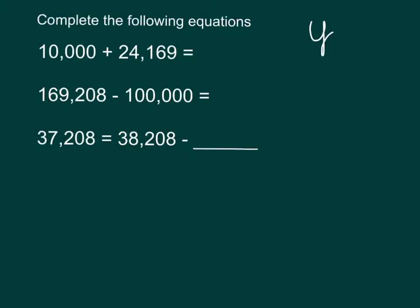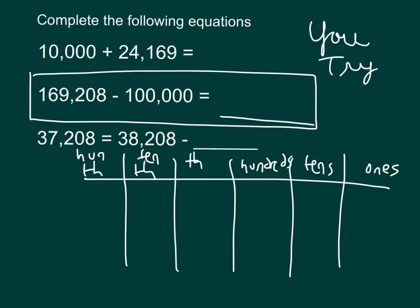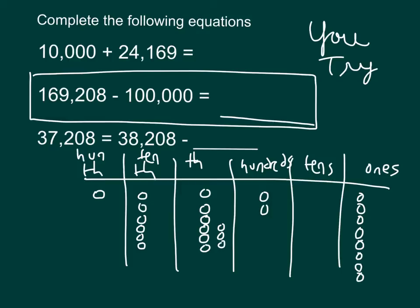It's your turn — go ahead and work on the second problem using a place value chart. Pause the video while you do your work. Here I'm finishing labeling my place value chart. It looks like I'm taking this number and subtracting 100,000 from it — finding what number is 100,000 less. So I'll model that number: one, six ten thousands, nine thousands. That's 169,208.